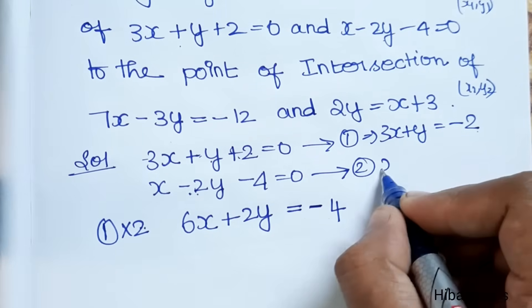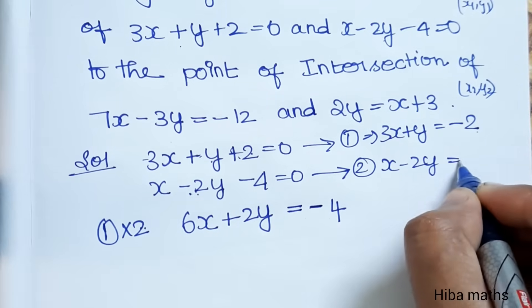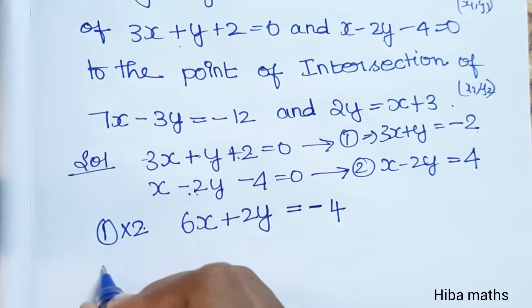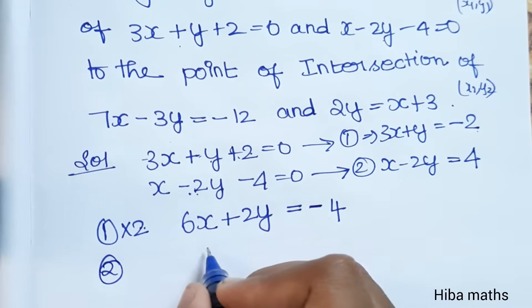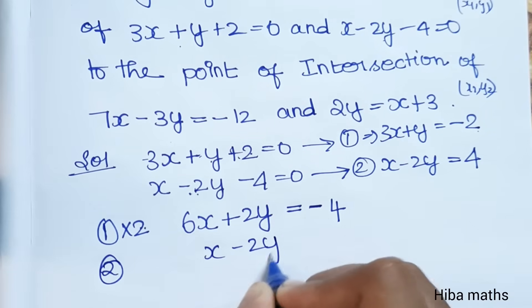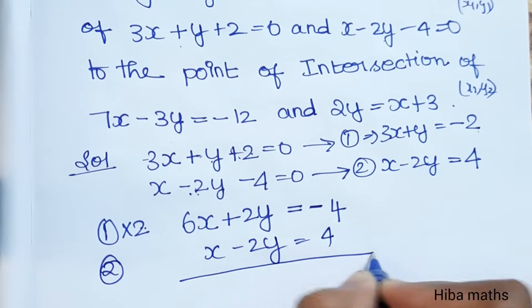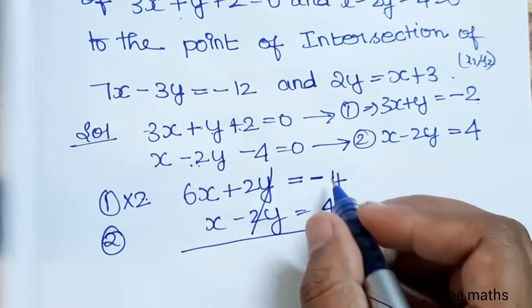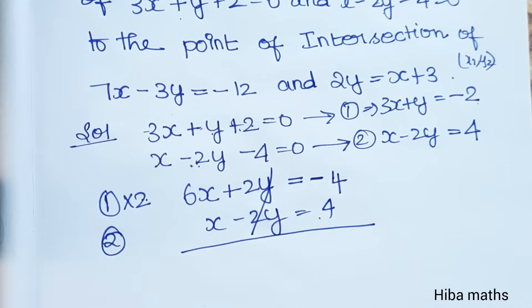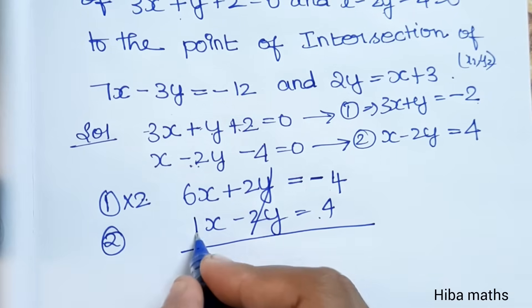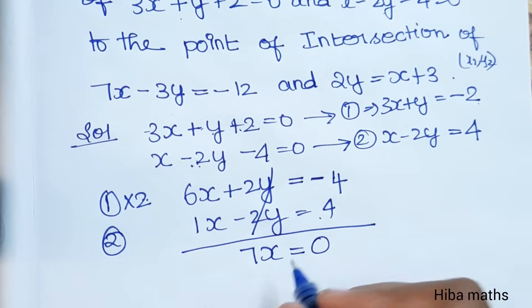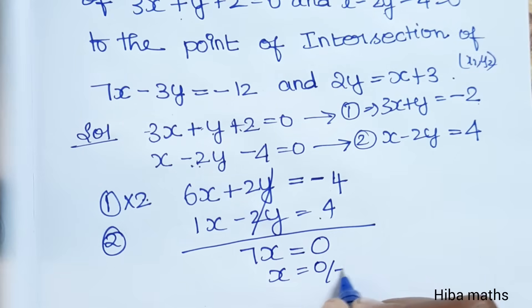The second line is x - 2y = 4. Adding: plus 2y and minus 2y cancel, minus 4 and plus 4 cancel. So 6x + 1x = 7x, and the y terms cancel to 0.